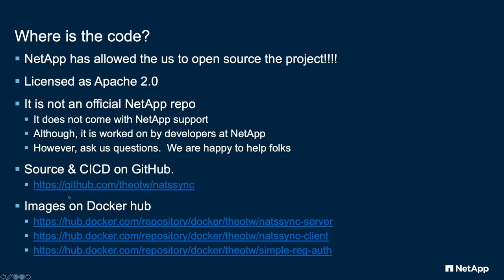This is hosted on GitHub — here's the URL — and the images are hosted on Docker. The HTTP proxy server is hosted under a different project on GitHub. It's something I threw together for fun; it's not part of NatSync specifically, though it is open sourced as well. It's under the OTW (One True Way) open source hosting area, which is my personal space for open source projects.